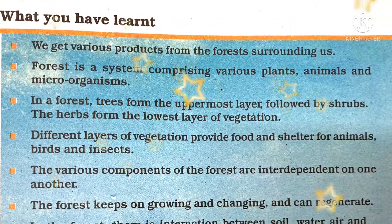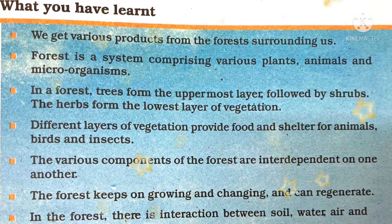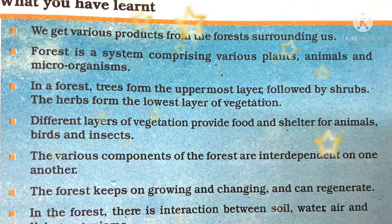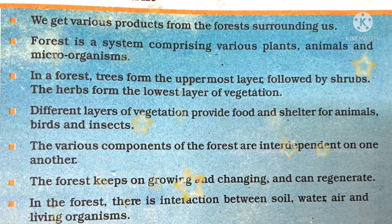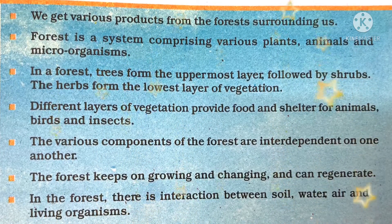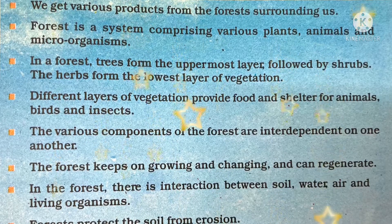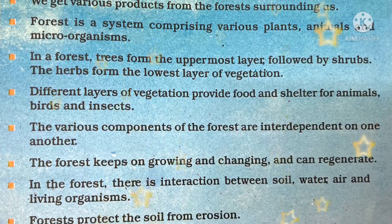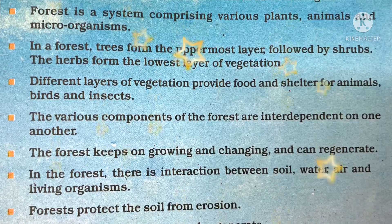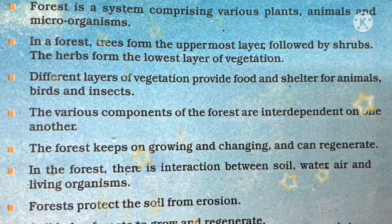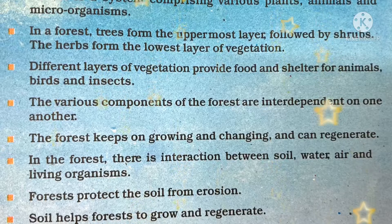What we have learnt from forest our lifeline: we get various products from the forests surrounding us. Forest is a system comprising various plants, animals and microorganisms. In the forest, trees form the uppermost layer followed by shrubs. The herbs form the lowest layer of the vegetation. Different layers of vegetation provide food and shelter for animals, birds and insects.